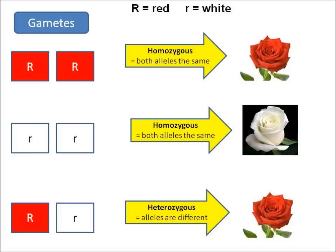A rose can either be red or white, and that is determined by the genes it inherits from its two parents. If both copies of the gene are red — big R — then the rose will be red. If both copies of the gene are little r, white, then the rose will be white.